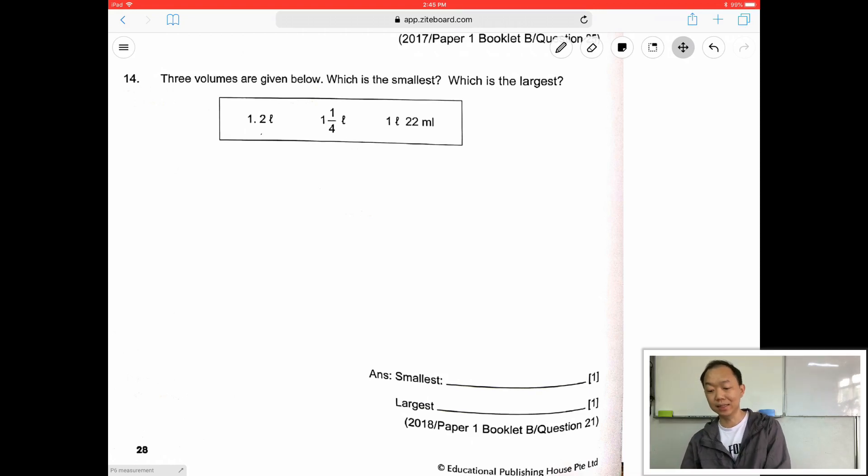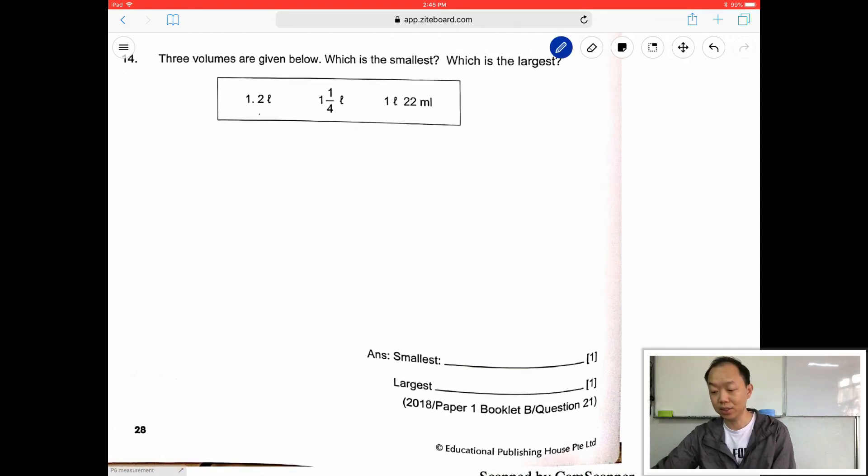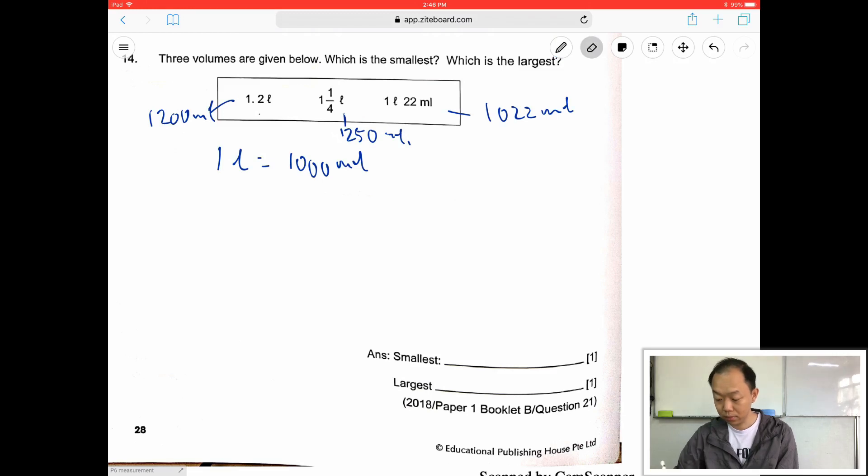So 3 volumes are given, which is the smallest, which is the largest. 1 liter equals 1000 milliliters. So 1.2 liter in this case is 1200 ml, 1.022 ml, and this is 1.250 ml. So the largest is 1.25 ml.